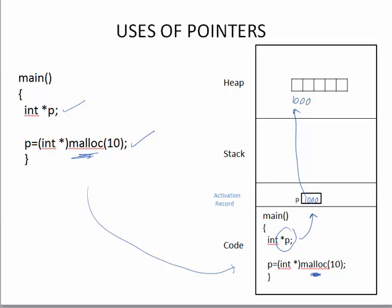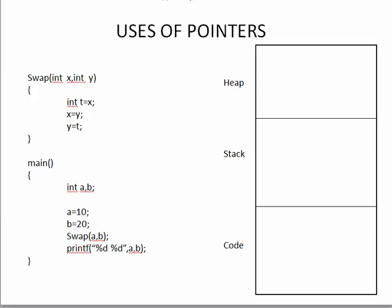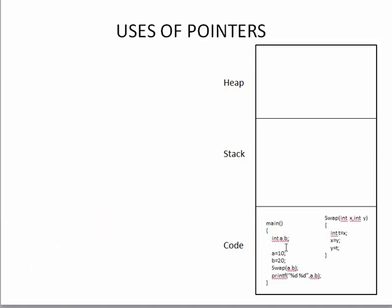The second usage of pointers is in call by reference. Let's take an example: main has two variables, and I want to swap their values using a swap function. The main function calls swap, which takes variables x and y and tries to swap them. However, this will not work because these are simple variables — this will be a call by value.